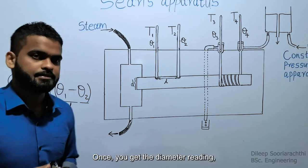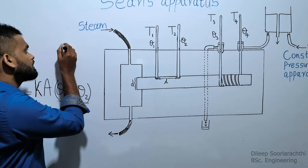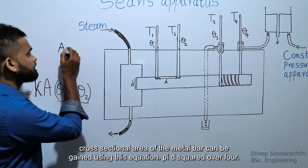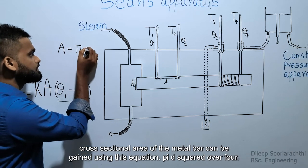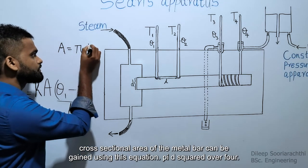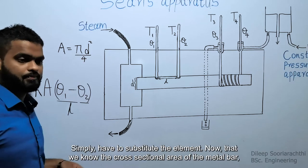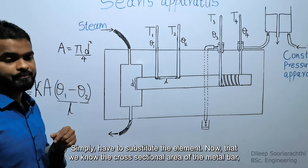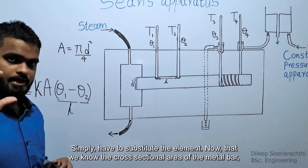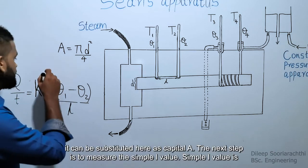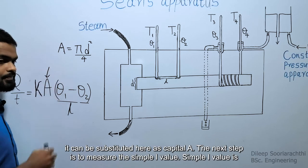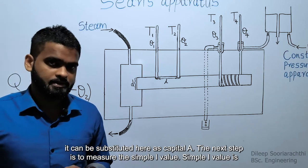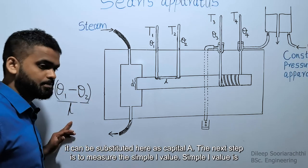Once you get the diameter reading, the cross-sectional area of the metal bar can be calculated using this equation: π D squared over 4. You simply substitute the diameter value, and now that we know the cross-sectional area of the metal bar, it can be substituted into the equation as capital A.